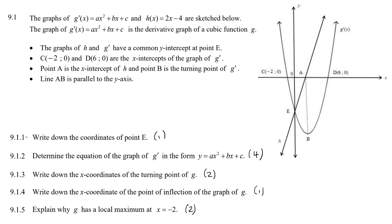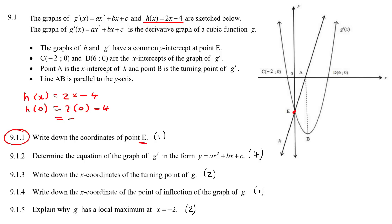The first question asks us to write down the coordinates of point e. That's easy — you can use the equation given and find its y-intercept by making x equal to zero. That gives us negative four, so the coordinates of e would be (0, −4).